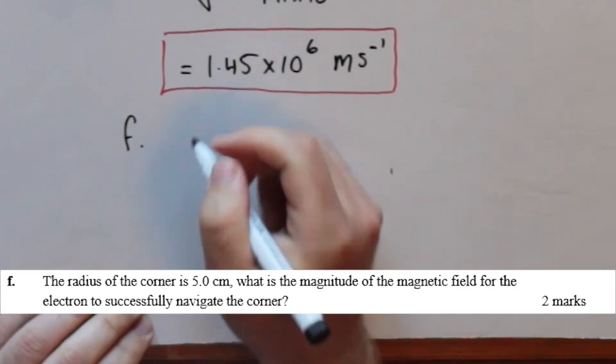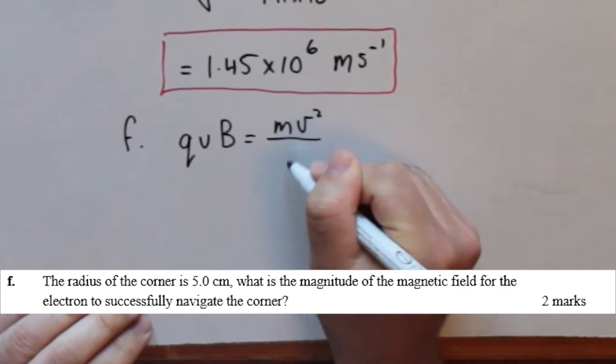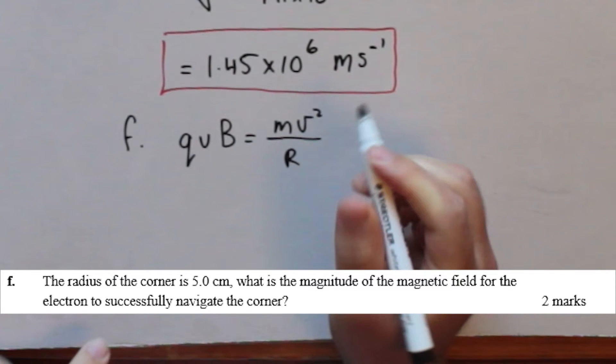The radius of the corner is 5 centimetres. What is the magnitude of the magnetic field for the electron to successfully navigate the corner?